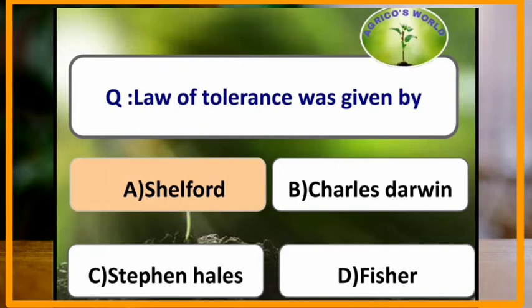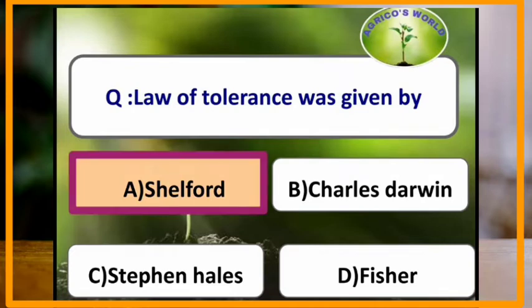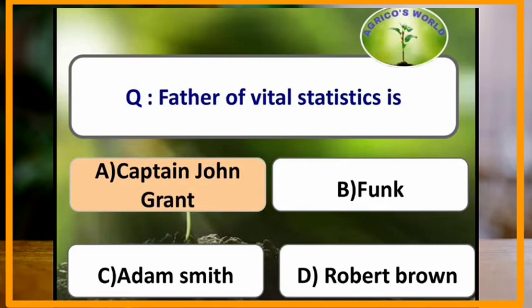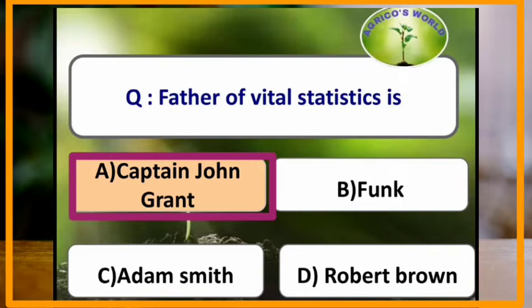Law of tolerance was given by which scientist? Law of tolerance was given by Shelford. Father of vital statistics is Captain John Graunt. Captain John Graunt is the father of vital statistics.